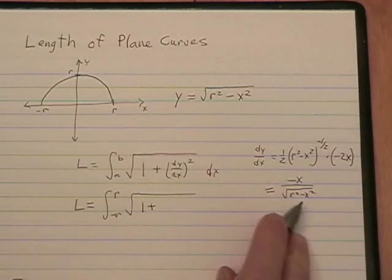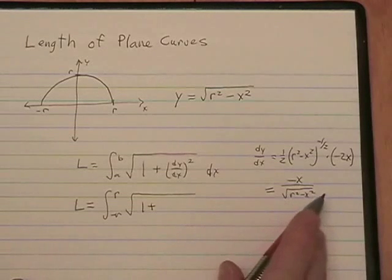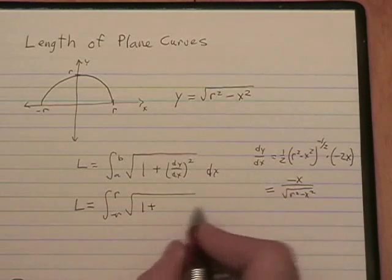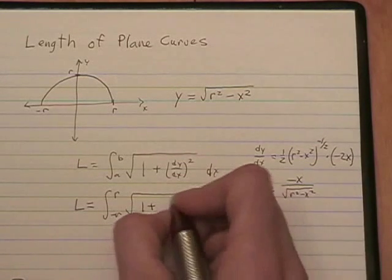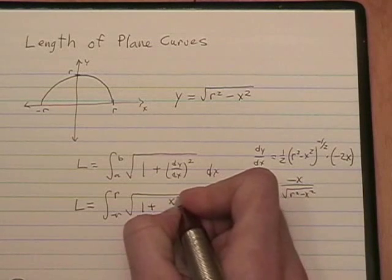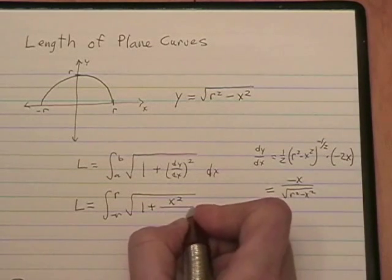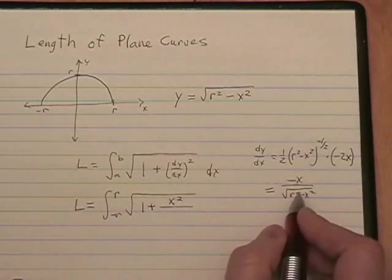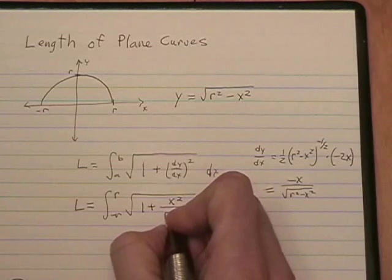Okay, so it's not as simplified as I make it sound, but this is what we're going to use for our derivative. Now, we need to square our derivative. So, when I put it in, I'm going to square everything. Negative x times negative x is x squared. The square root of r squared minus x squared times the square root of r squared minus x squared is r squared minus x squared.